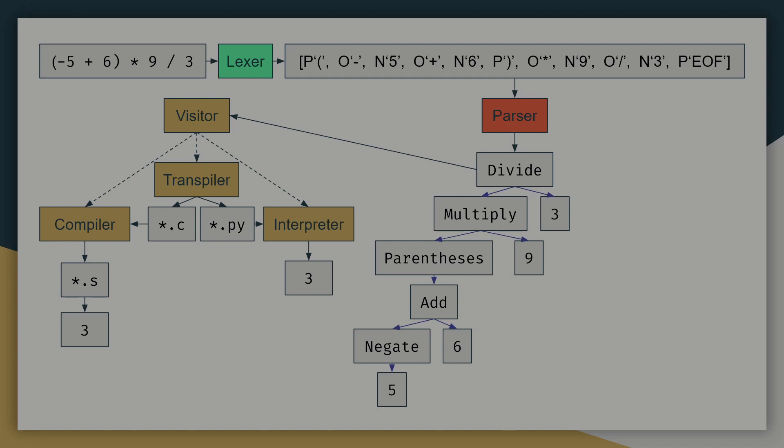There are benefits to all of these approaches. Compiling will be the fastest, but requires knowledge of assembly. The compiler will also have to be written separately for every single CPU architecture that you want to support. Transpiling is easier than compiling, but due to the extra steps, it can be slower.